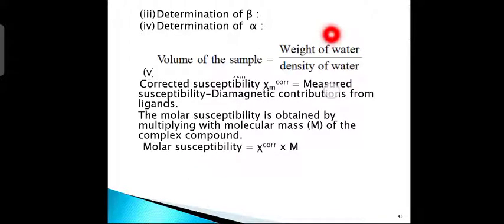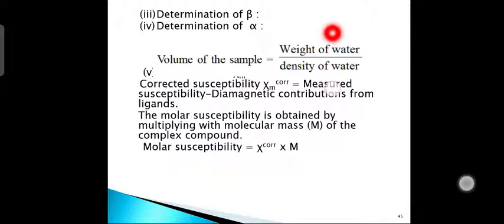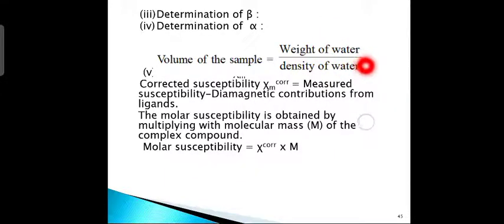Determination of β: the Guise tube is emptied, cleaned, and dried. It is filled with Hg[Co(NCS)₄] complex up to the mark with close packing, then weighed in the absence and presence of the magnetic field. The laboratory temperature is noted, and knowing χ of the calibrant at the given temperature, β is calculated. Determination of α: the same Guise tube is filled with distilled water up to the mark, and the volume of the sample is calculated using the density of water at lab temperature. Volume = weight of water / density of water. Then α = 0.029 × volume of the sample.